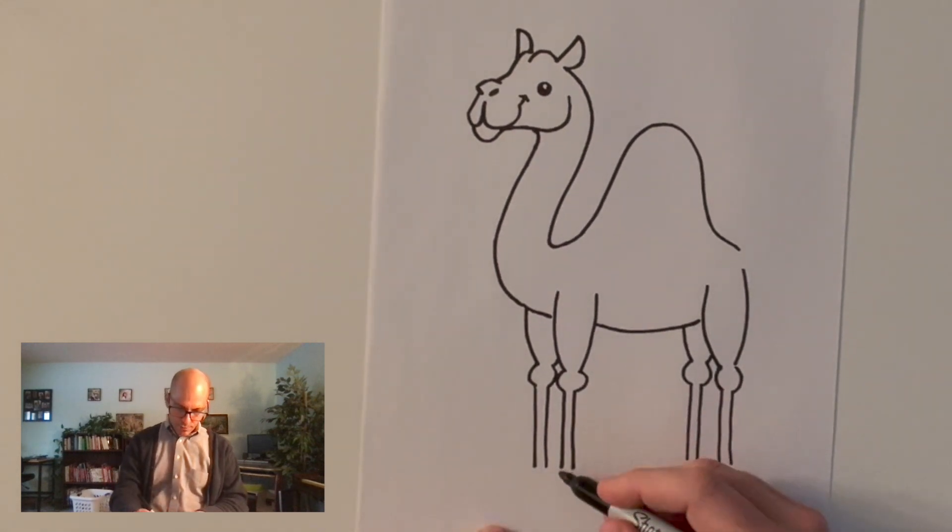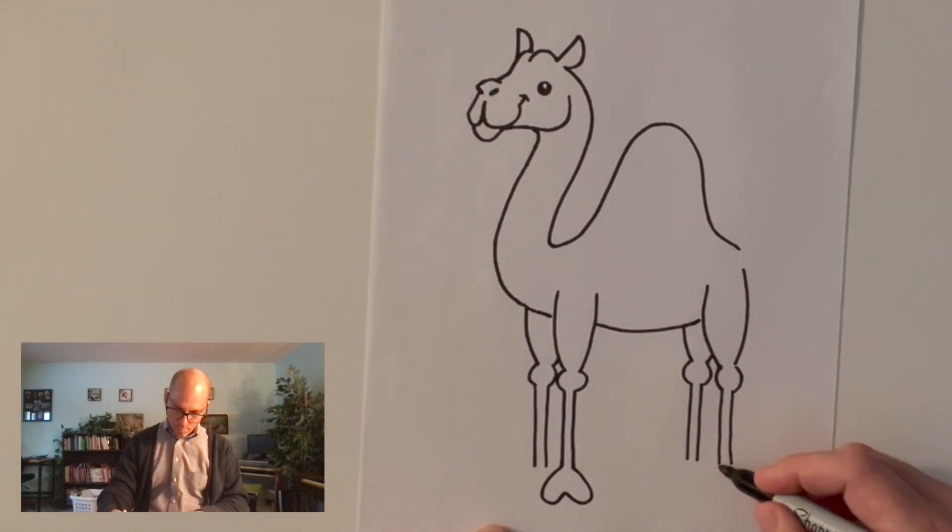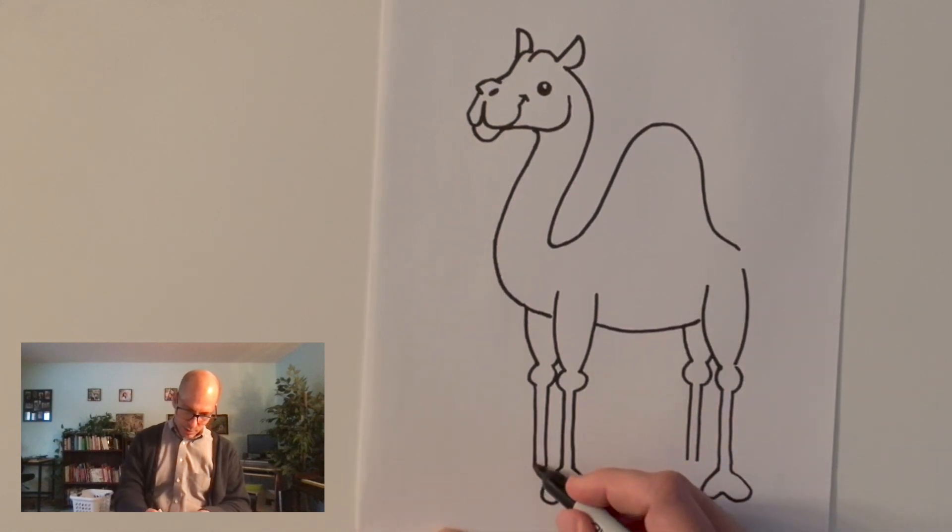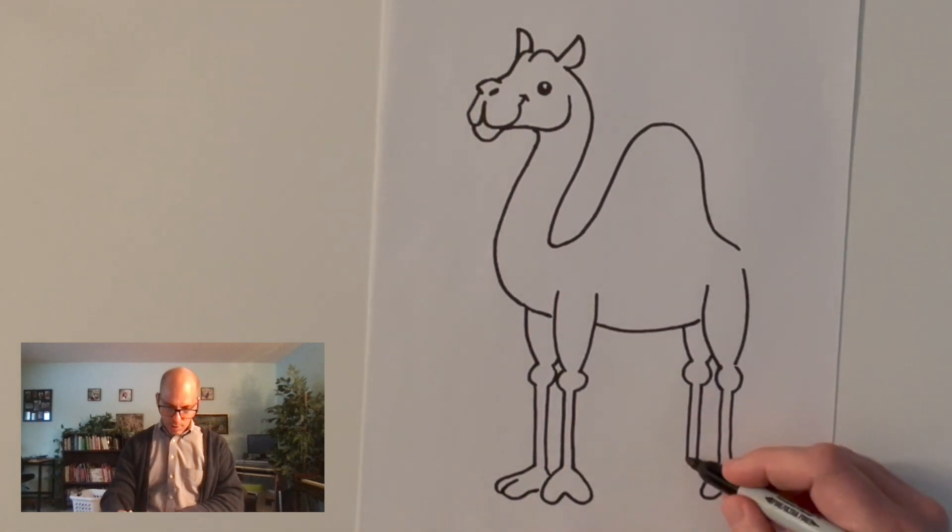Now camels have funny feet. They have two toes, kind of like an upside down heart. That's all well and good. Now I'm going to try and draw this one over here a little bit differently. So it's kind of the same shape, but look at that from the side, viewed from the side.